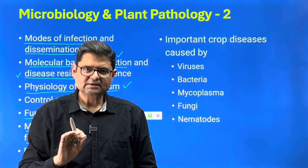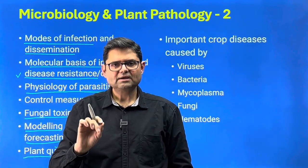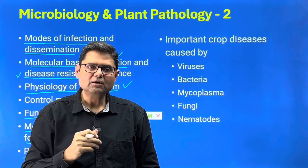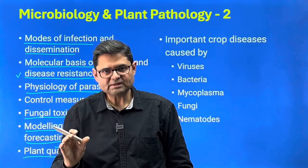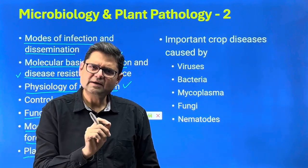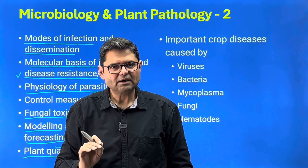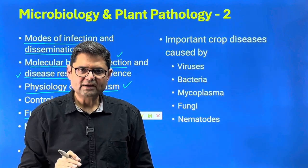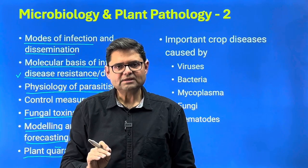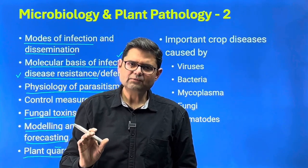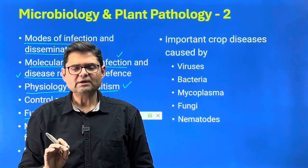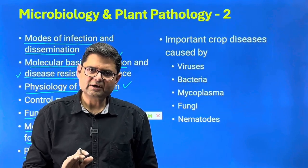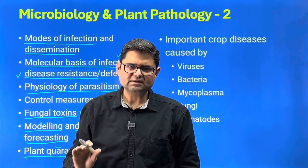For each plant disease, cover: the name of the disease, the causative agent, the common name, the host species including other related host species attacked by the same pathogen, symptoms of the disease, and control measures. You do not have to cover the disease cycle — UPSC no longer asks the disease cycle of any particular plant disease. Do not overburden yourself with the disease cycle.